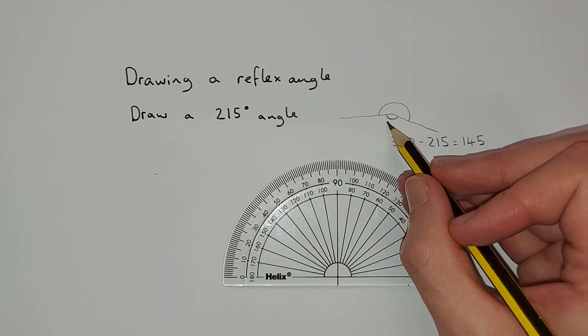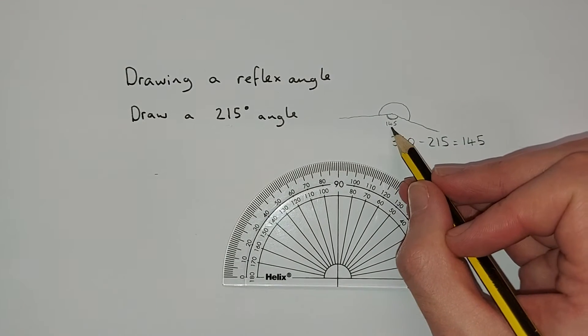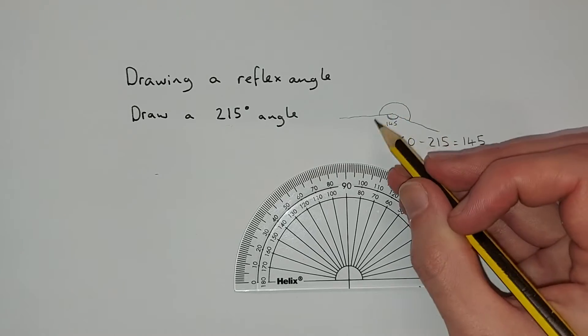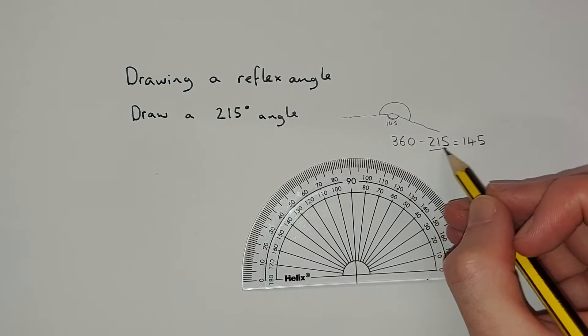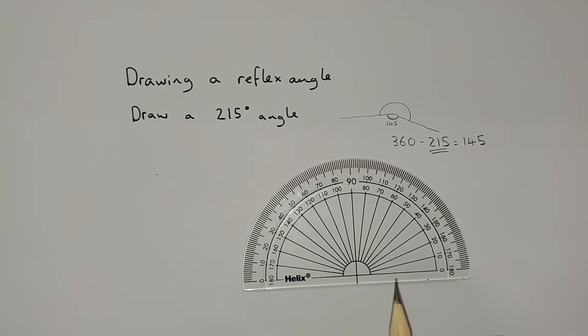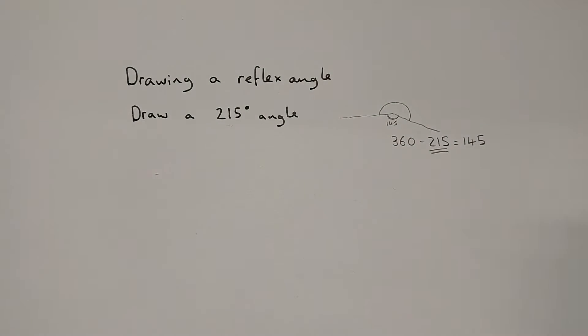Okay, so this angle in here is 145. We can measure that angle and then we know that the bigger angle, the reflex angle around the outside, will be 215. So we've kind of converted it into an obtuse angle and then we'll draw that now.